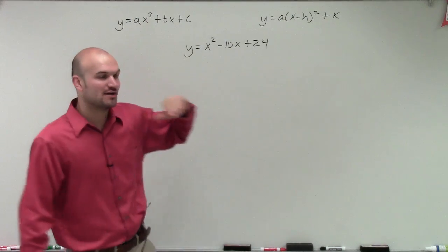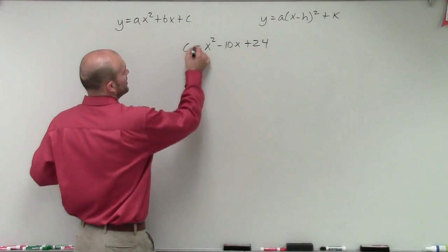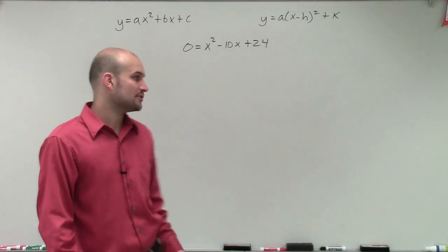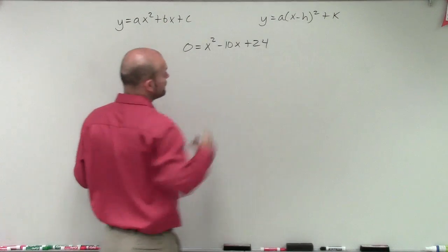So remember, what we're going to do by solving to complete the square, the first thing we're going to want to do is set our output value equal to 0, because we're going to want to find the values of x that are going to make this equation true. And what we want to do is we want to go from standard form over to our vertex form.